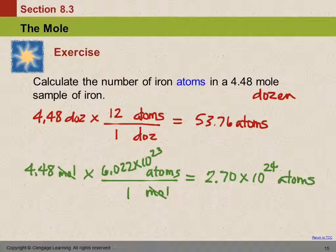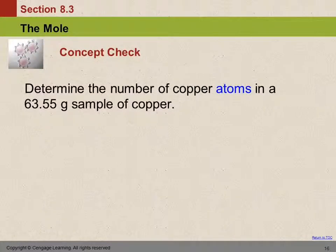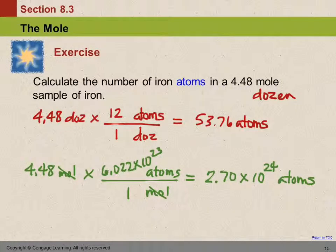That's a lot of atoms. Any questions? One mole is Avogadro's number of things. Just like one dozen is 12 things. One mole is 6.022 times 10 to the 23rd things.